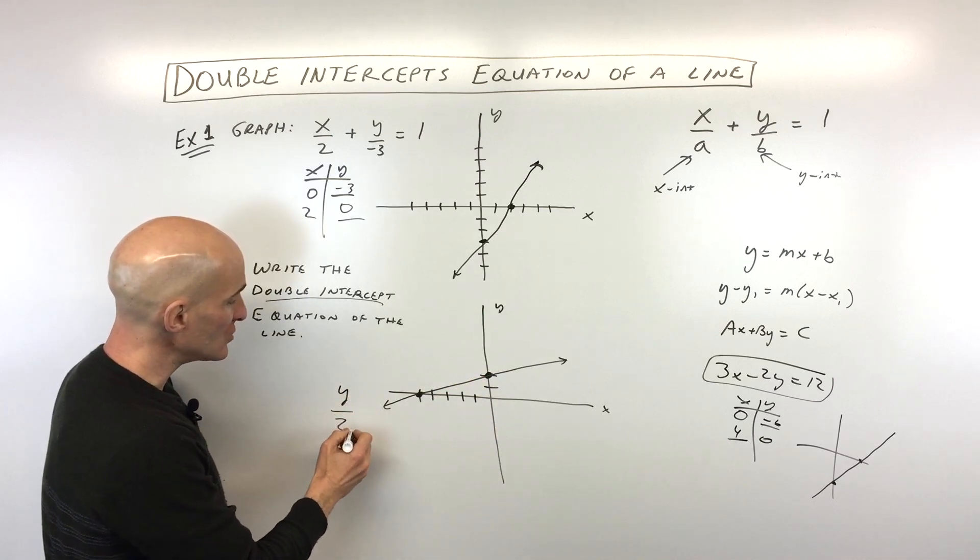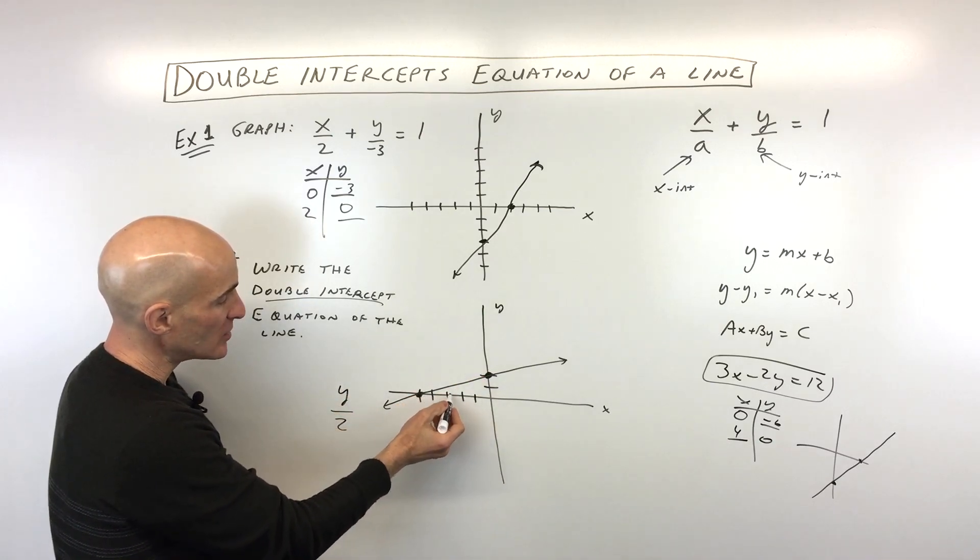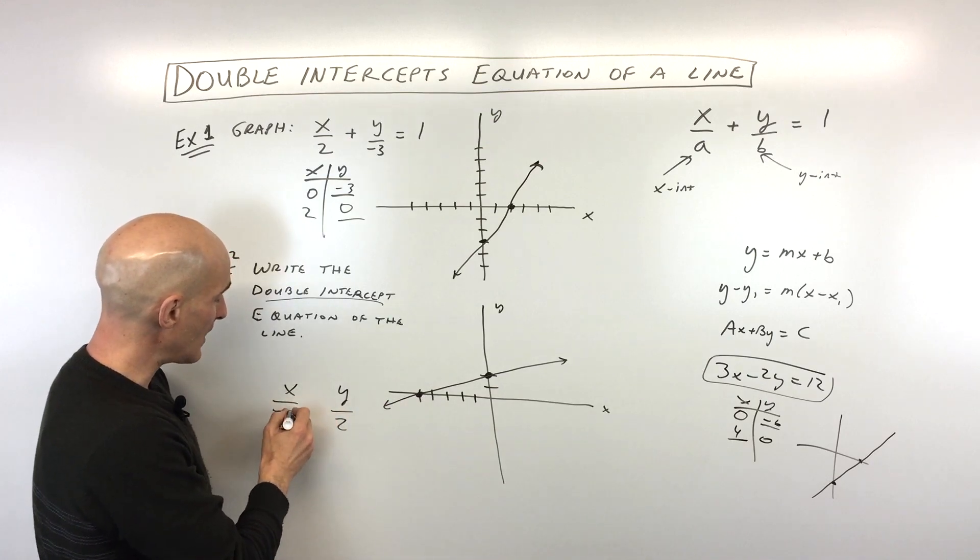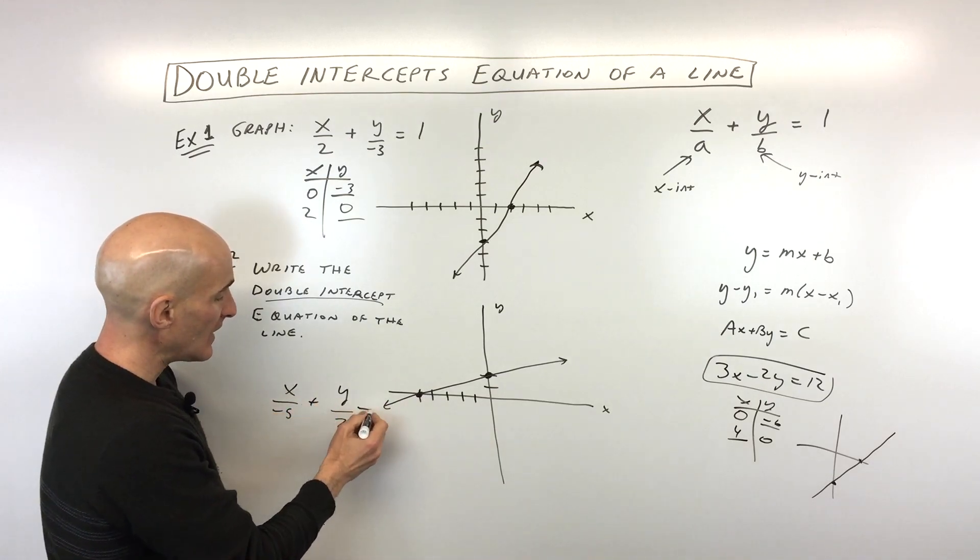Notice that our y-intercept is 2. Okay, so we have y over 2. Our x-intercept is 1, 2, 3, 4, negative 5. So we have x over negative 5 and then equals 1.